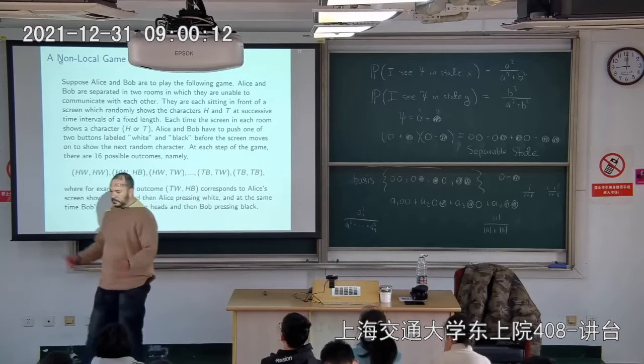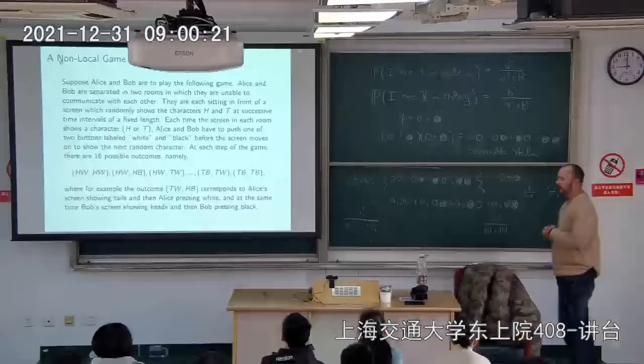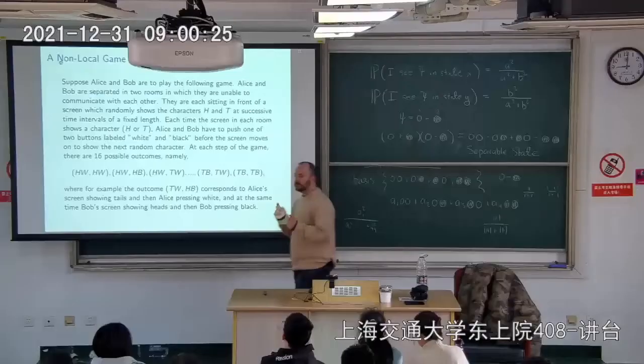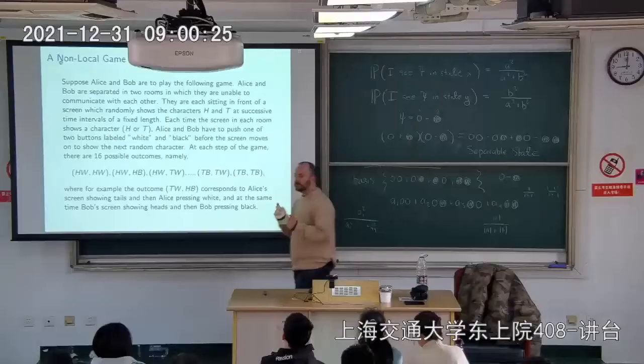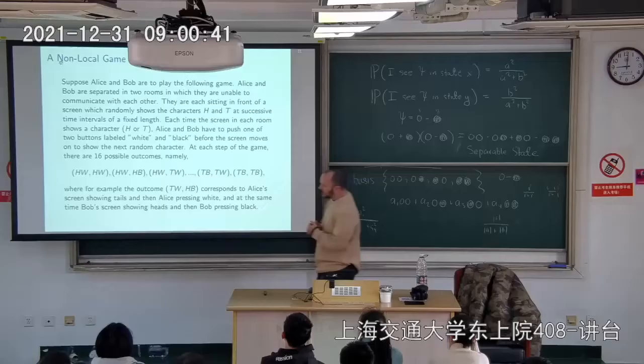The next example is a non-local game played by two contestants, Alice and Bob. They're not playing against each other — they're a team. In this game, Alice and Bob can gain a quantum advantage by sharing an entangled state. Using a simple quantum computer with a Hadamard gate and a two-particle entangled state, they can win a game that no classical strategy could ever win — they can win it 100% of the time.